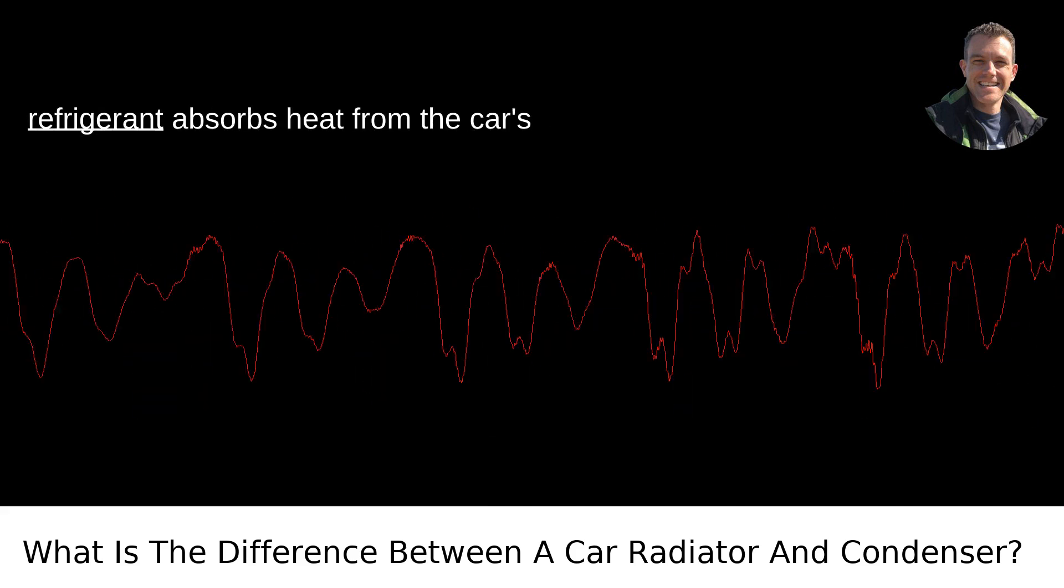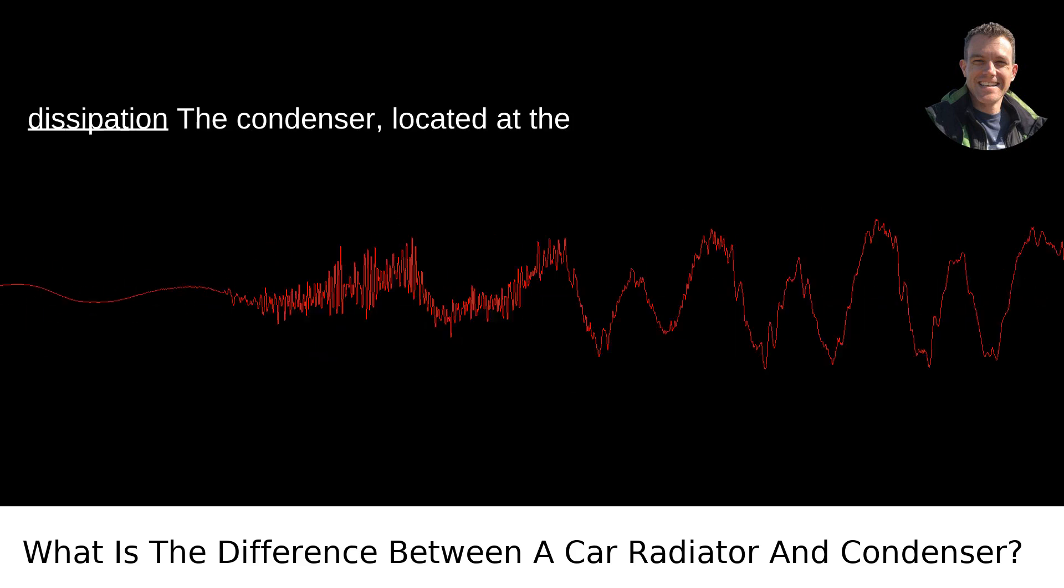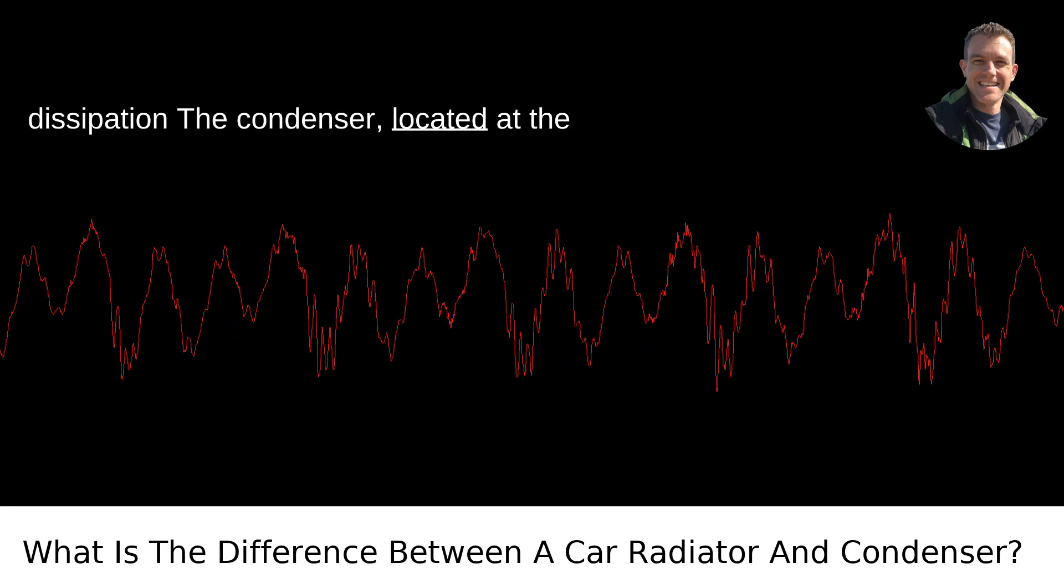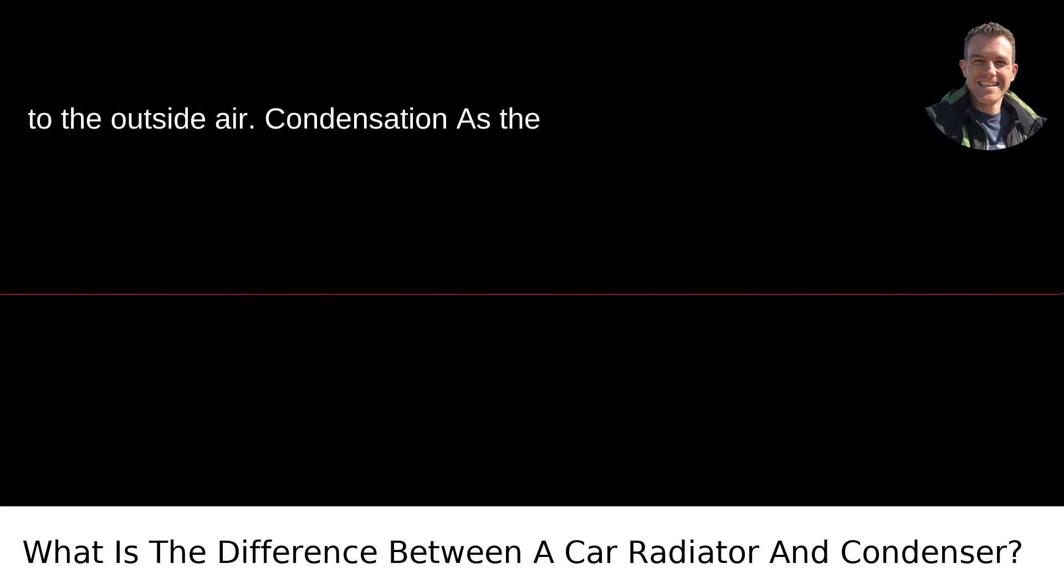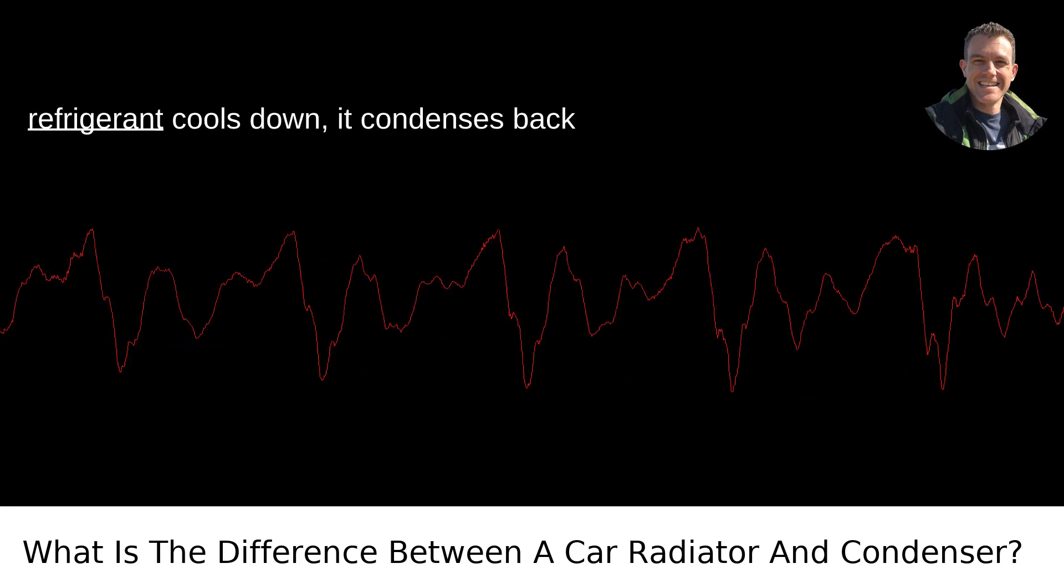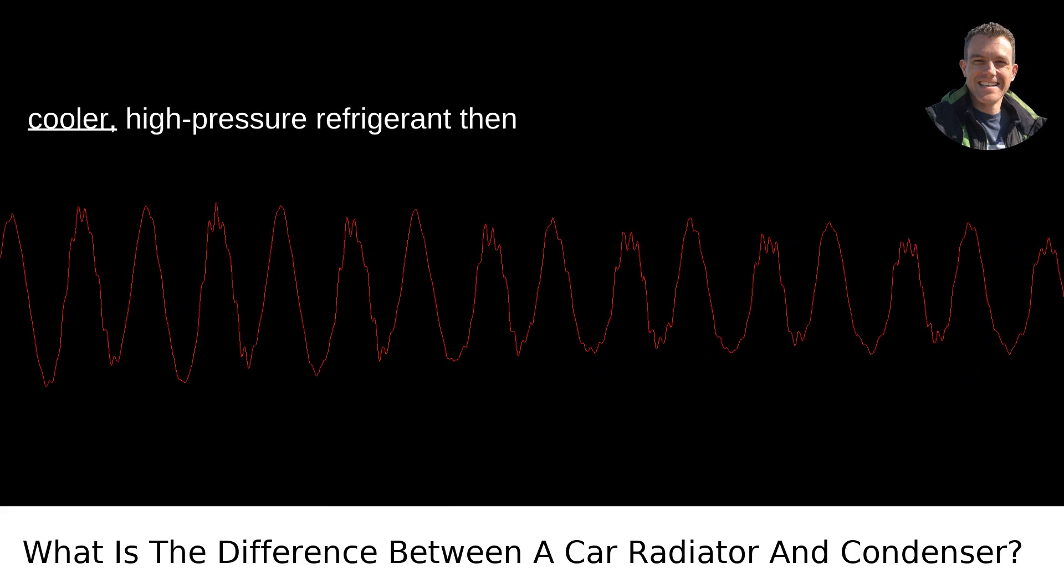Refrigerant: The refrigerant absorbs heat from the car's interior as it evaporates. Heat dissipation: The condenser, located at the front of the radiator, releases this heat to the outside air. Condensation: As the refrigerant cools down, it condenses back into a high-pressure liquid. Cycle: This cooler, high-pressure refrigerant then cycles back into the cabin to absorb more heat.